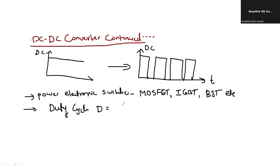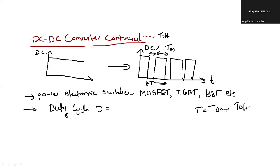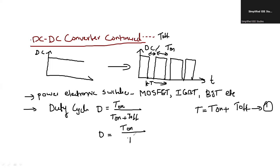So what do you mean by duty cycle? Duty cycle is nothing but — consider the waveform: this is the off period (T_off) and this is the on period (T_on). T is the total time period, which comprises the sum of the on period and the off period. That is equation number one.